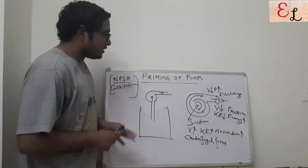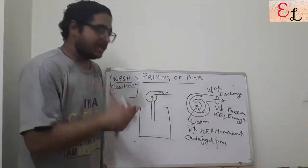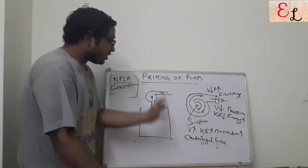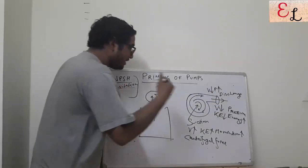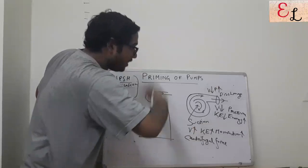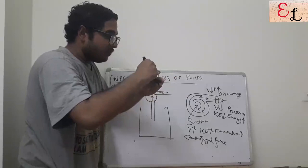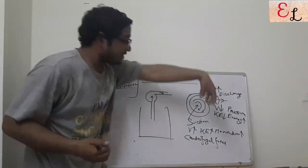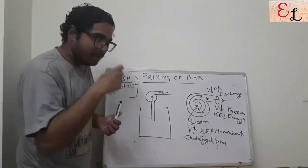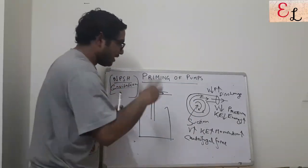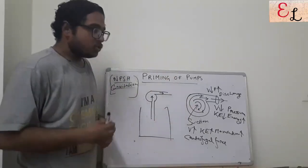Now you have to understand: as soon as the pump starts rotating, how does it create a suction? It creates a suction because of the fact that its discharge is working. When the pump starts rotating it gives a discharge, and the centrifugal force or the momentum that it creates at the discharge — an analogous type of momentum or energy or force is created in the suction as well.